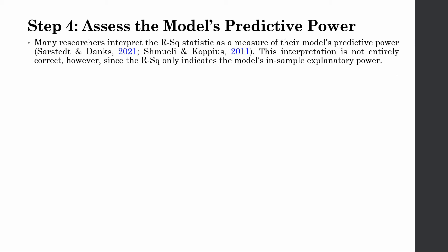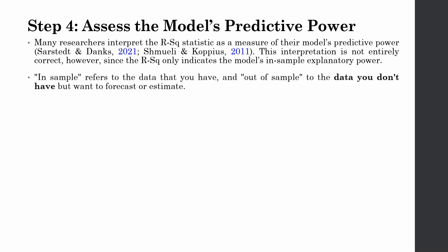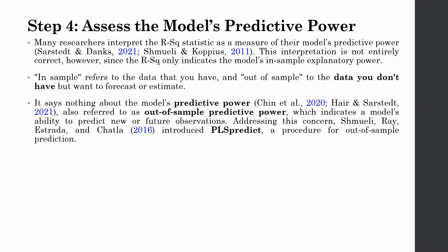Many researchers interpret the R-squared statistic as a measure of their model's predictive power. However, this interpretation is not entirely correct, since R-squared only indicates the model's in-sample explanatory power — that is, how well you can explain your endogenous variables for the whole sample. In-sample refers to data you have, and out-of-sample to data you do not have but want to forecast. R-squared says nothing about predictive power — how well you can predict the outcome. For that, you need out-of-sample predictive power.